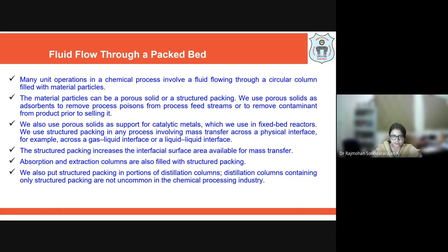Structured packings consist of thin corrugated metal plates that allow the fluid to flow through complicated pathways, which allows more surface area to be available for mass transfer. These structured packings are also used in distillation columns, and portions of distillation columns containing only structured packings are not uncommon in the chemical process industry nowadays. In the case of porous solids, they can be used as a support for catalytic metals. Structured packings involve mass transfer across physical interfaces, which could be gas-liquid or liquid-liquid interfaces.